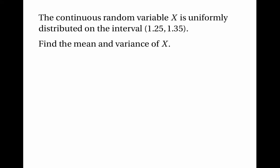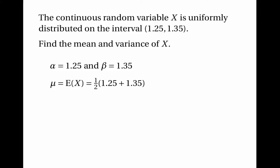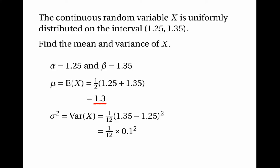Here's the first example. Suppose we have a continuous random variable x uniformly distributed on the interval 1.25 to 1.35. Let's find the mean and variance of x. In this case alpha is 1.25 and beta is 1.35. The mean is a half of 1.25 plus 1.35, which is 1.3 — halfway between the two endpoints. The variance is a twelfth of the square of 1.35 minus 1.25, which is a twelfth times 0.1 squared, giving 1 over 1200.